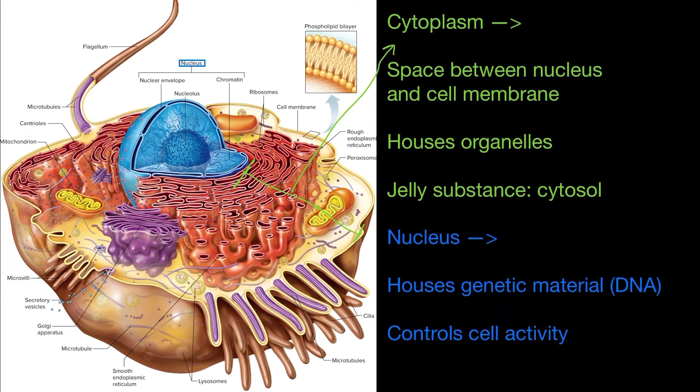Now you can see here in the green, this region right here is the cytoplasm. The cytoplasm is the space between the nucleus and the cell membrane and it houses organelles and it has a jelly-like substance which is called cytosol.